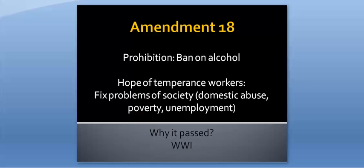Amendment 18, Prohibition, was passed in 1918. This amendment was promoted as a way to fix many of the problems in society. Temperance supporters believed that outlawing alcohol would eliminate domestic abuse, problems at work, and poverty, just to name a few things. However, this was not enough to get the amendment passed. What finally got it passed was World War I. During World War I, conserving food to support troops was very popular. One of the main food staples, wheat, was used to make alcohol. The argument became that drinking was actually taking food away from soldiers on the front lines. Therefore, it became unpatriotic to not support the prohibition of alcohol, leading to the passage of the 18th Amendment.